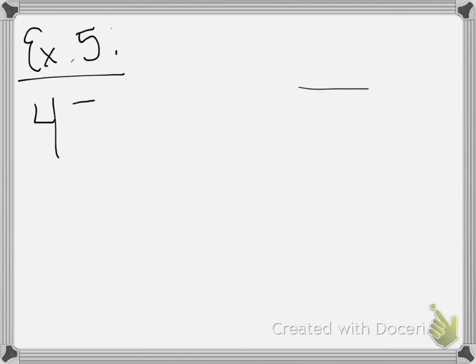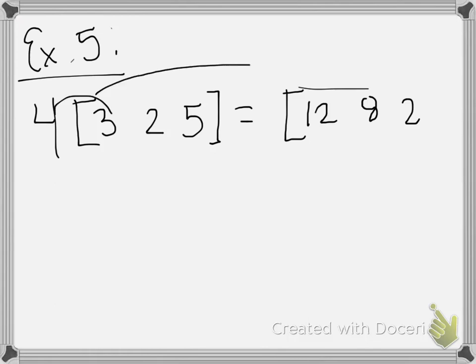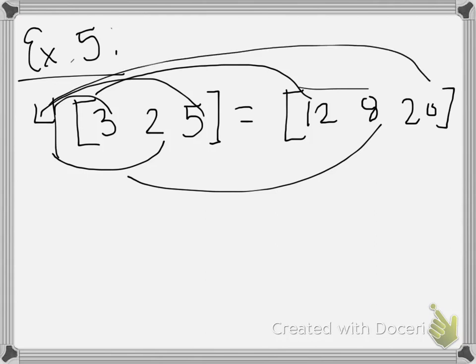So we have 4 times a row matrix of 3, 2, 5. And I kind of gave it away there a little bit, but you distribute. 4 times 3 gets you the 12. 4 times 2 gets you the 8. And then 4 times 5 will get you 20. That's all there is to it.